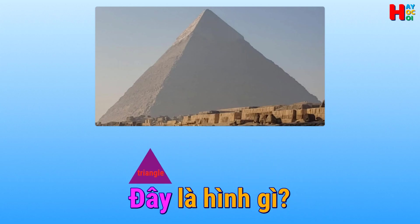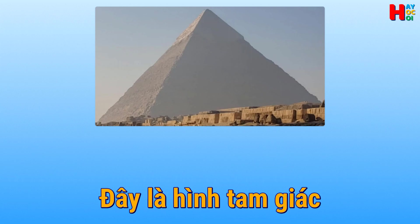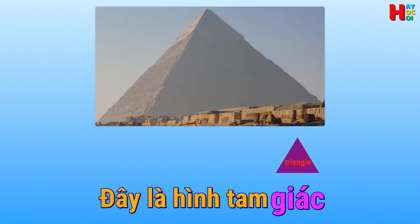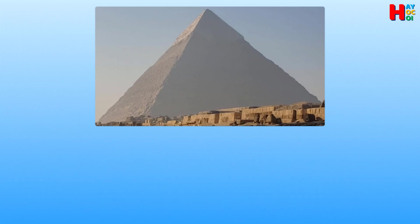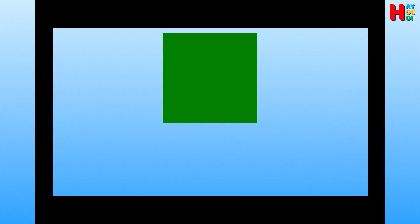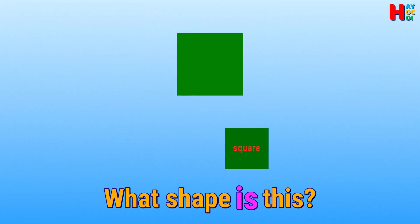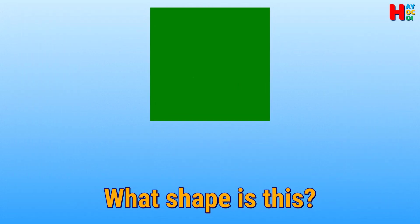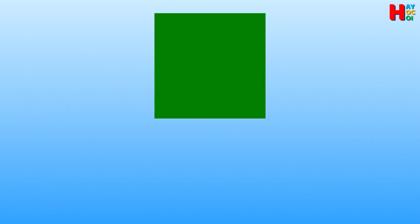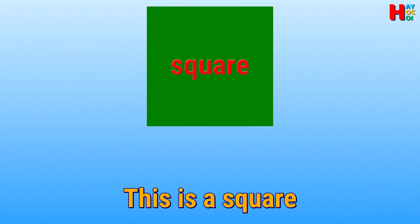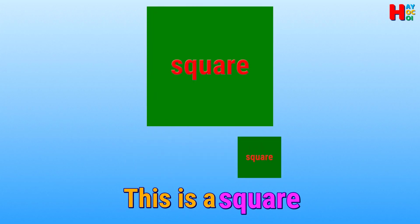This is a triangle. Đây là hình gì? Đây là hình tam giác.